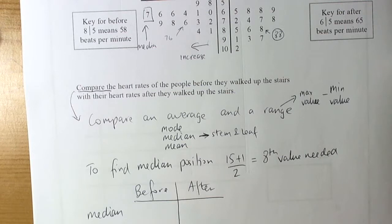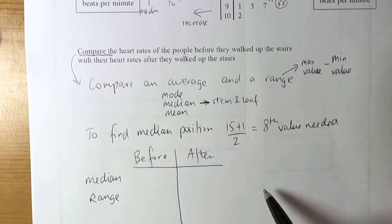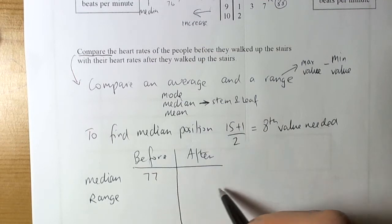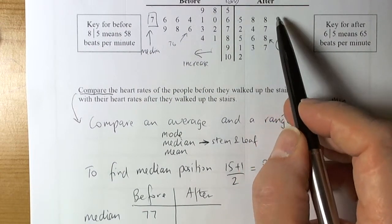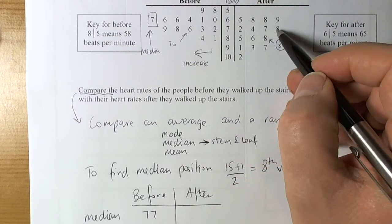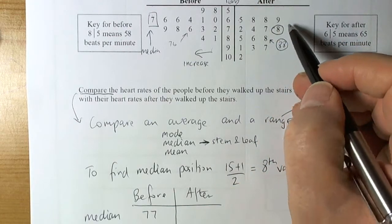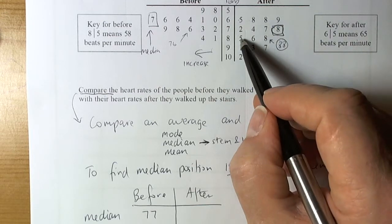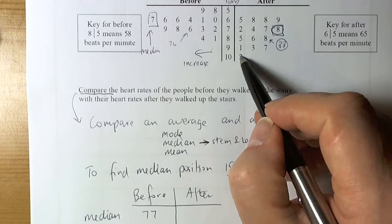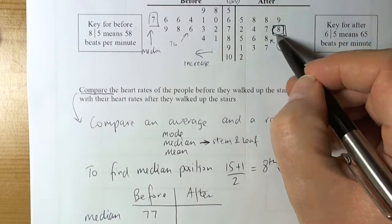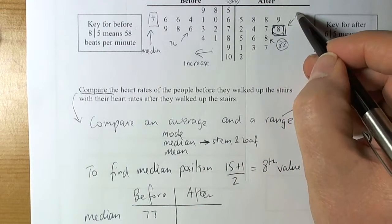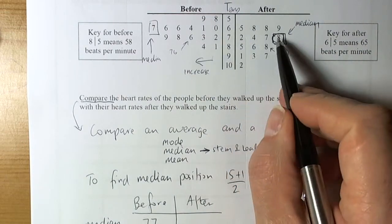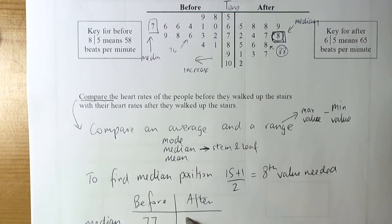So median and range. So the median before was 77 beats. And the median after 1, 2, 3, 4, 5, 6, 7, 8. So our median should have 7 after it. 1, 2, 3, 4, 5, 6, 7. So the 8th value. So that's the median for the after values. So that's going to be 78.